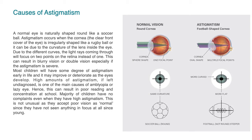Due to the different curves, the light ray coming through will focus on two points on the retina instead of one. This can result in blurry vision or double vision, especially if the astigmatism is severe.